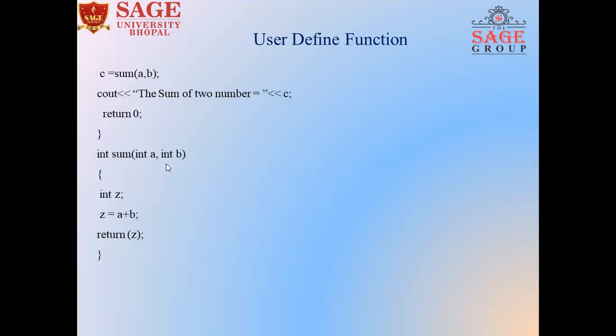So A is integer data type and B is also integer data type. This is called formal arguments, and sum A and B is called actual arguments. Here we will give the definition of user-defined function. After opening the user-defined function body, we will declare one variable that is Z and the type of Z variable is integer.